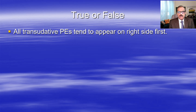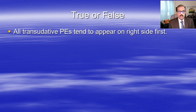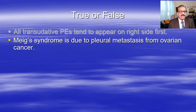All transudative pleural effusions - heart failure, cirrhosis, nephrotic syndrome - tend to appear on the right side first. The pleural fluid accumulates on the right side first; ultimately it may become bilateral, but initially it is usually right-sided, and if it is bilateral the right side will be bigger. This is true - we do not exactly know the mechanism, but the quoted explanation involves some fenestrations in the diaphragm.